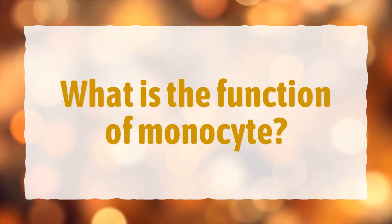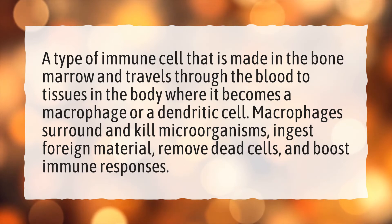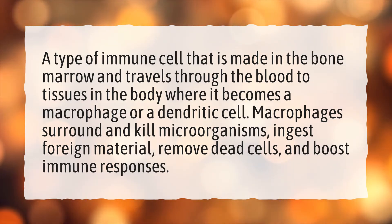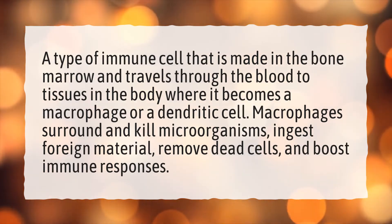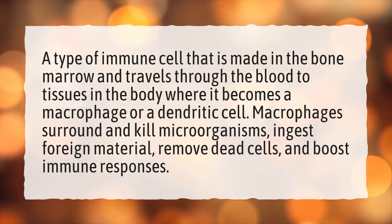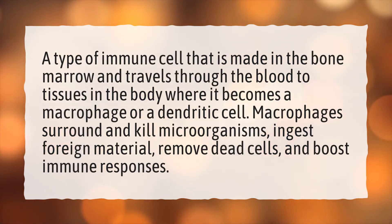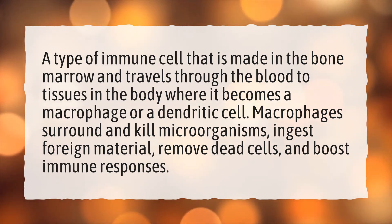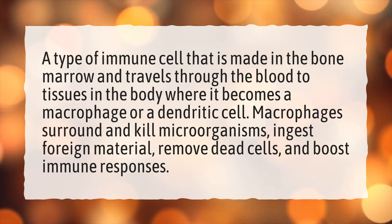What is the function of a monocyte? A type of immune cell that is made in the bone marrow and travels through the blood to tissues in the body, where it becomes a macrophage or a dendritic cell. Macrophages surround and kill microorganisms, ingest foreign material, remove dead cells, and boost immune responses.